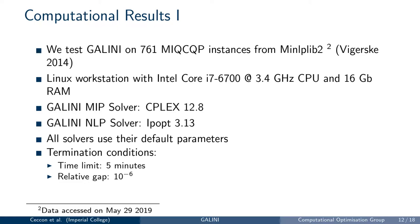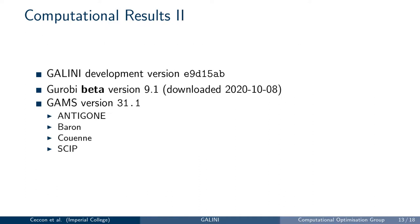We test Galini on 761 mixed integer quadratic constraint instances from MINLPlib2. All tests were run on a Linux machine with an 8-core Intel CPU and 16 GB of RAM. Galini uses CPLEX as MIP solver and IPOPT to solve non-linear problems. We give solvers 5 minutes to solve each problem to a relative gap of 10 to the minus 6. For these results, we use a development version of Galini, Gurobi beta version 9.1, and for all other solvers, the version included in GAMS 31.1.